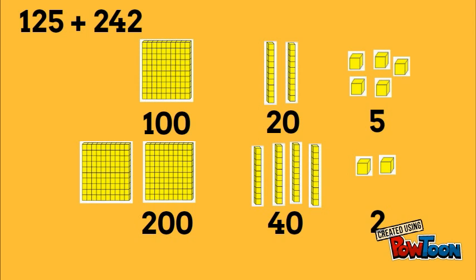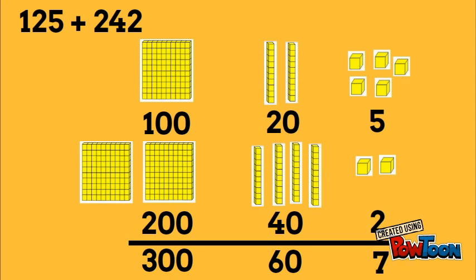And now we can add all this together to find our answer. Start at the right. 5 plus 2 gives us 7. And 20 plus 40 gives us 60. And 100 plus 200 gives us 300. So 300 plus 60 plus 7. And you can see that it's 367.